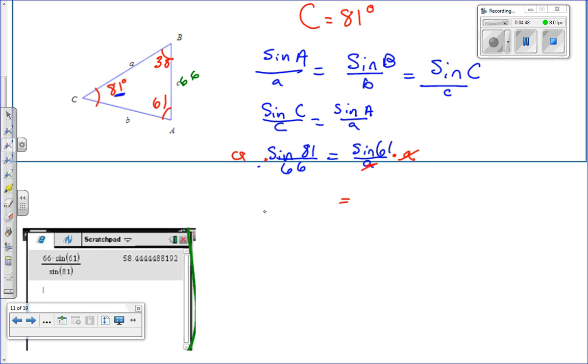that's going to give me A times the sine of 81, all divided by 66, equals the sine of 61 degrees. So to get A by itself, I'm going to divide by this whole guy, which is really like multiplying by the reciprocal. A little bit tricky there. So if you're dividing by sine of 81 degrees, divided by 66, to get A by itself.